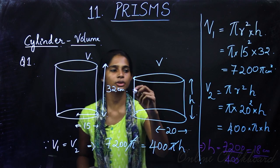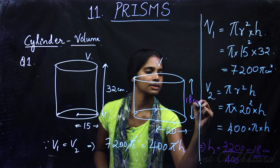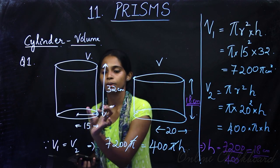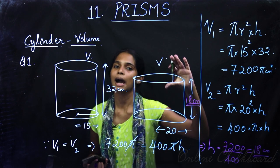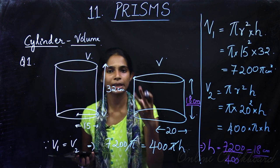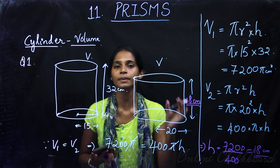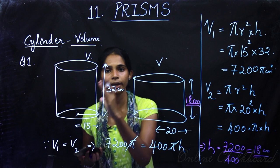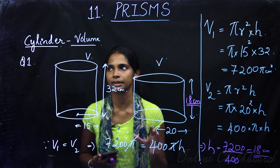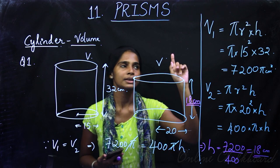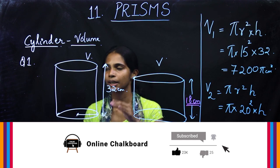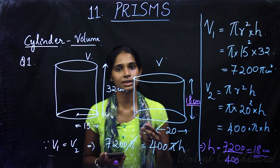So the height of the new cylinder is 18 centimeters. This is our answer. The key concept is: when an object is melted and recast, the volume remains the same. If you understand this concept, application questions become clear. The volume of a cylinder formula is πr²h. We will continue with more questions in the next class.